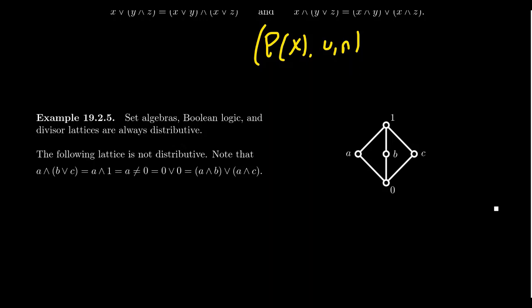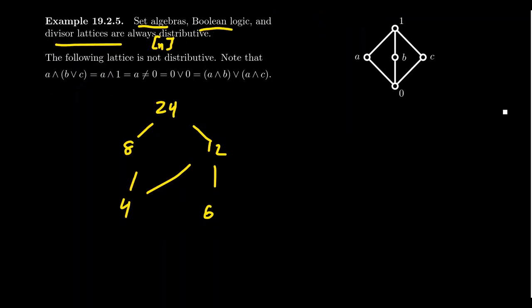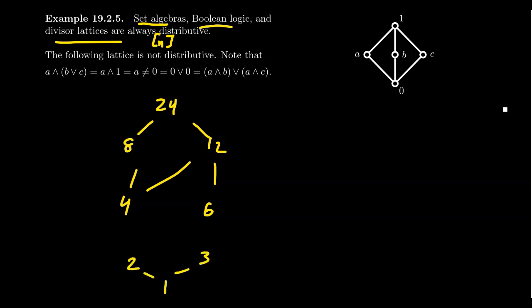Set algebras with union and intersection are always distributive. Boolean logic — with just two elements, true and false, and operations or and and — is also a distributive lattice. Divisor lattices are always distributive as well. For example, the divisors of 24 give a divisor lattice with elements 24, 8, 12, 4, 6, 2, 3, and 1 — and this is in fact a distributive lattice. It can be difficult to show when lattices are distributive, as it is a very strong property.